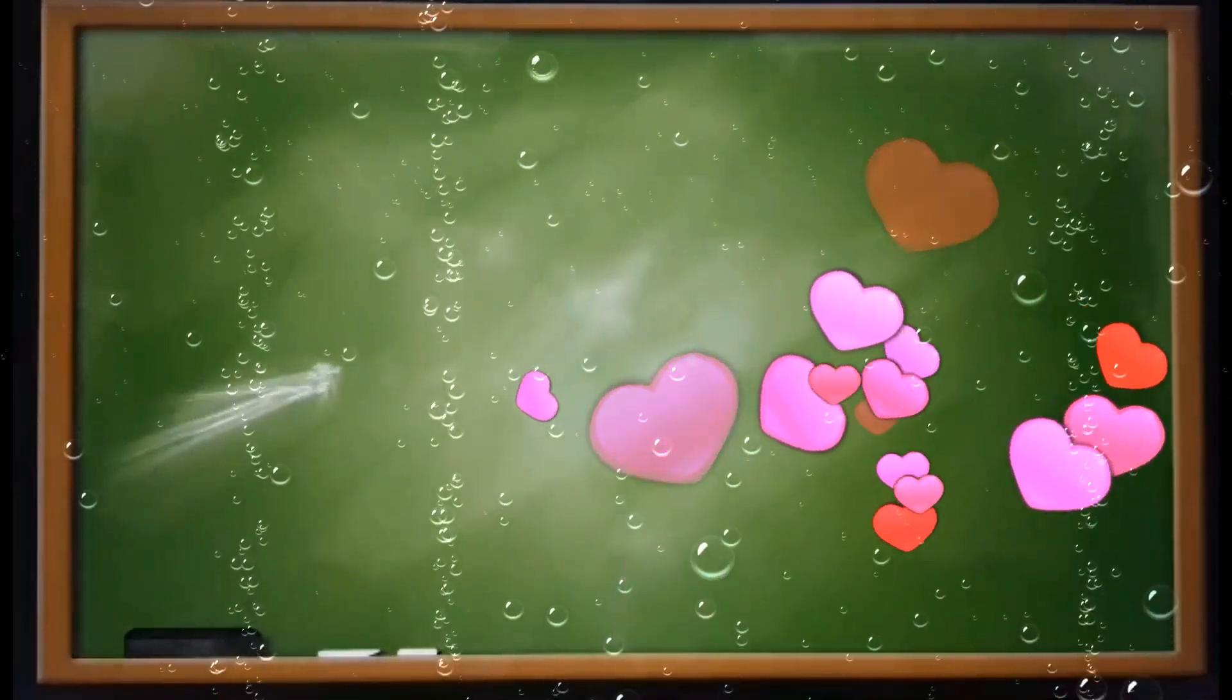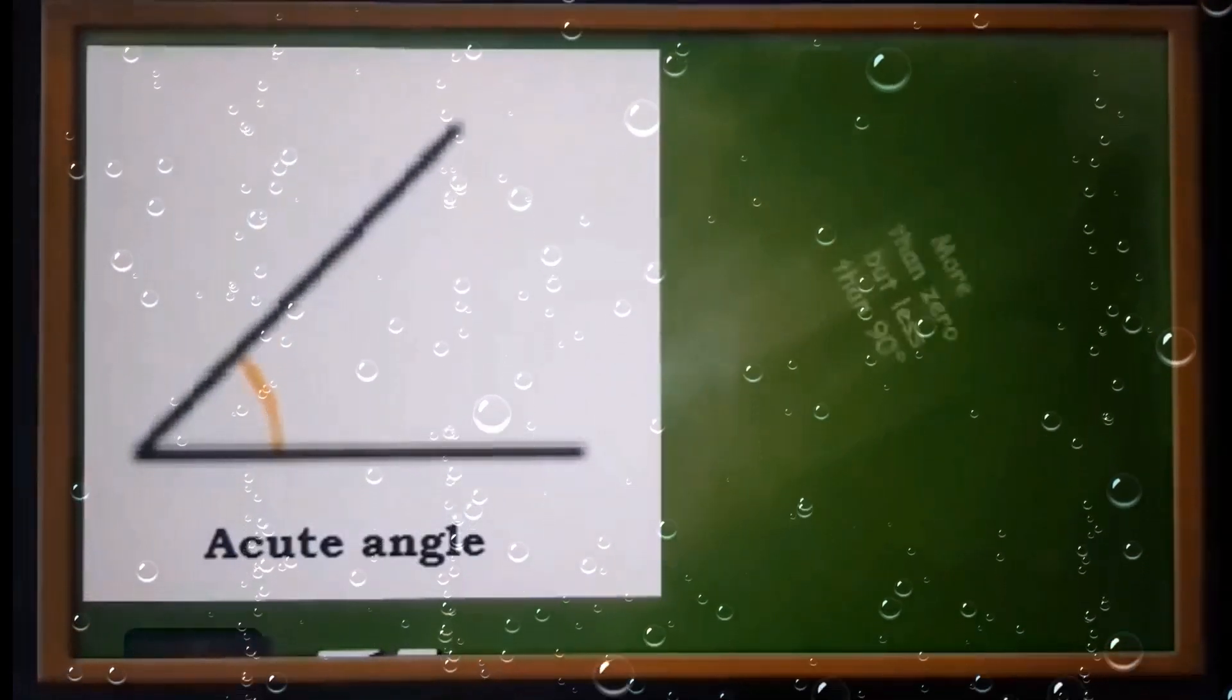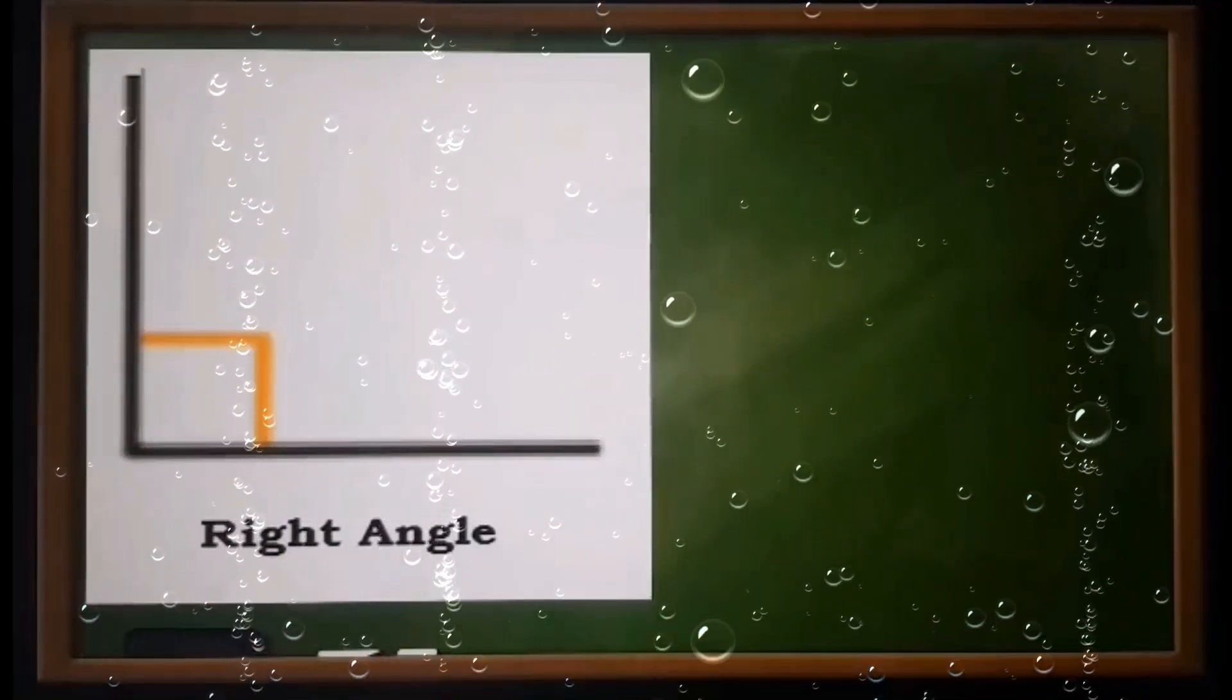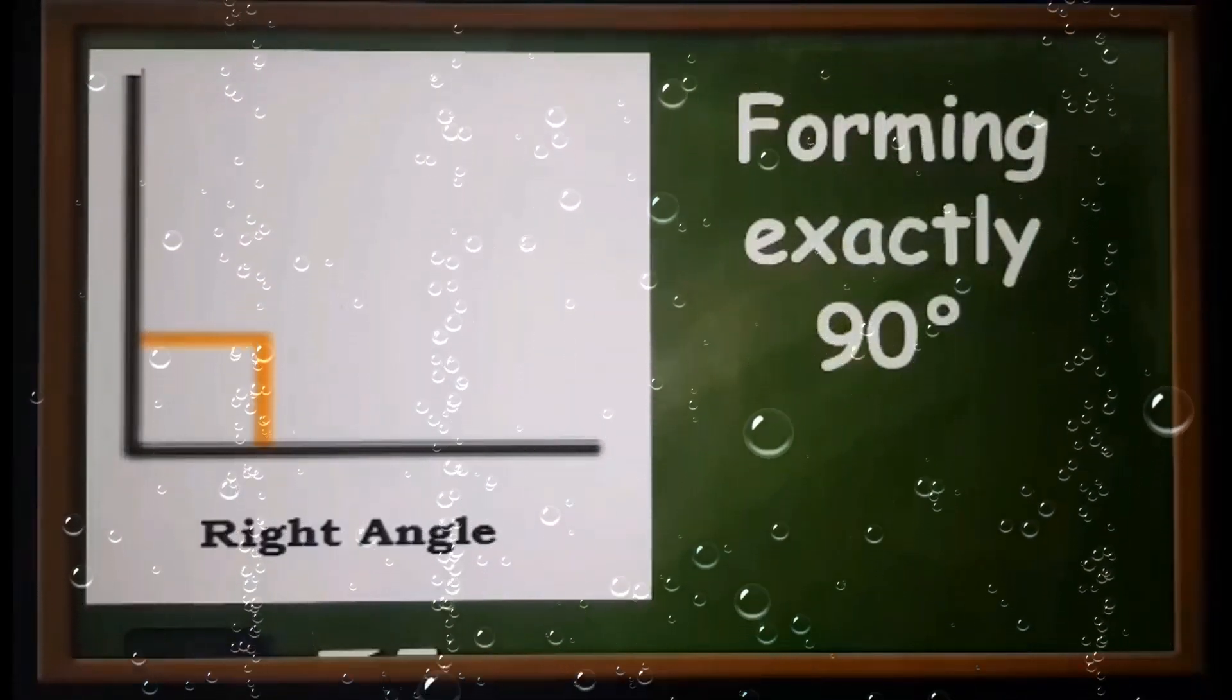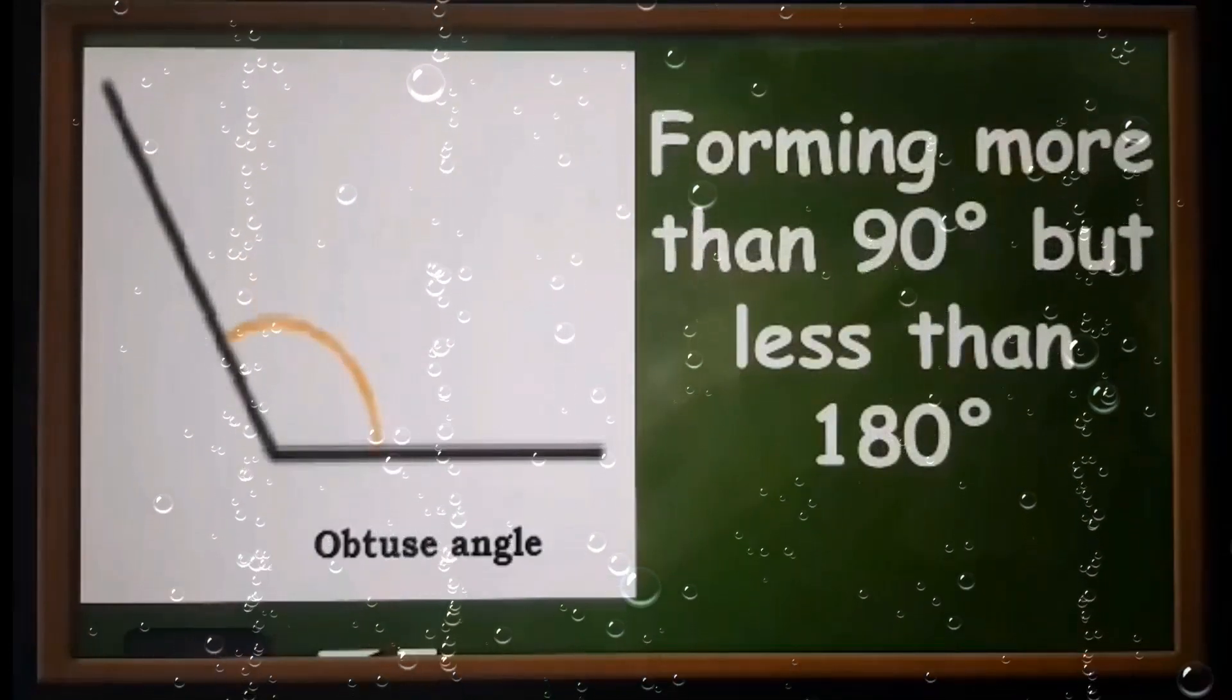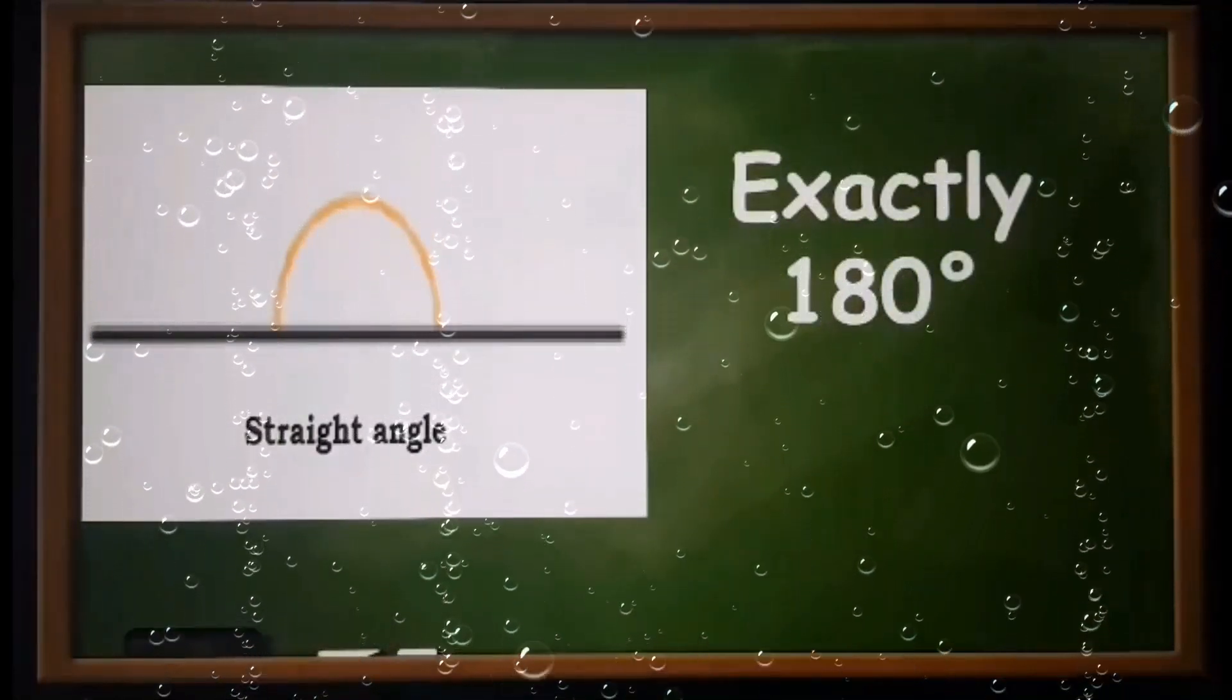These are the kinds of angles. Acute angle: measure more than zero but less than 90 degrees. Right angle: forming exactly 90 degrees. Obtuse angle: forming more than 90 degrees but less than 180 degrees. Straight angle: exactly 180 degrees.